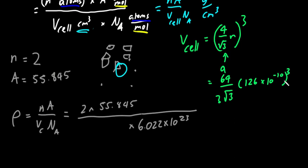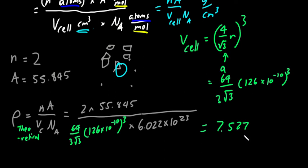So going from here, we just plug that volume, so 64 over 3 root 3, and then that's 126 times 10 to the negative 10 cubed. Plug, chug, get that theoretical density. That theoretical density should come out to be 7.527, that's what I got plugging into a calculator.